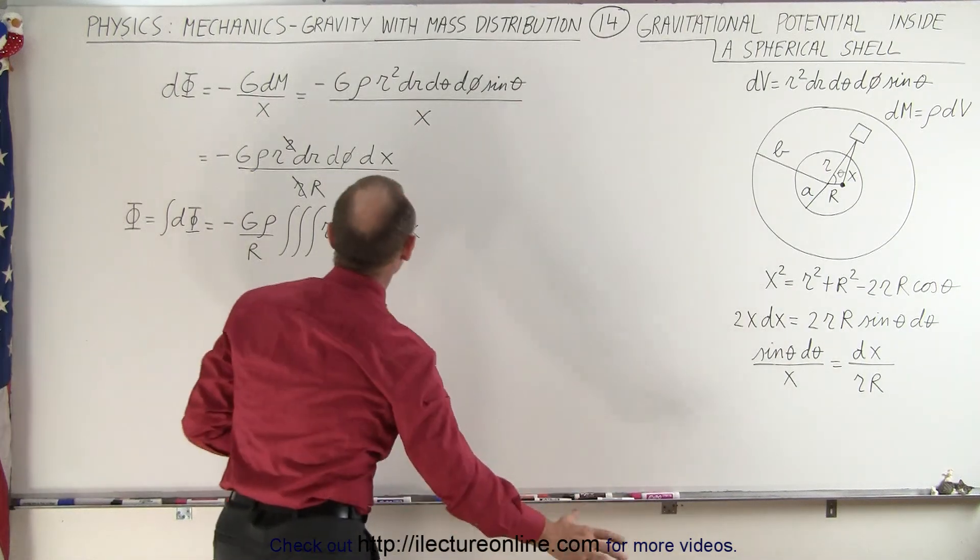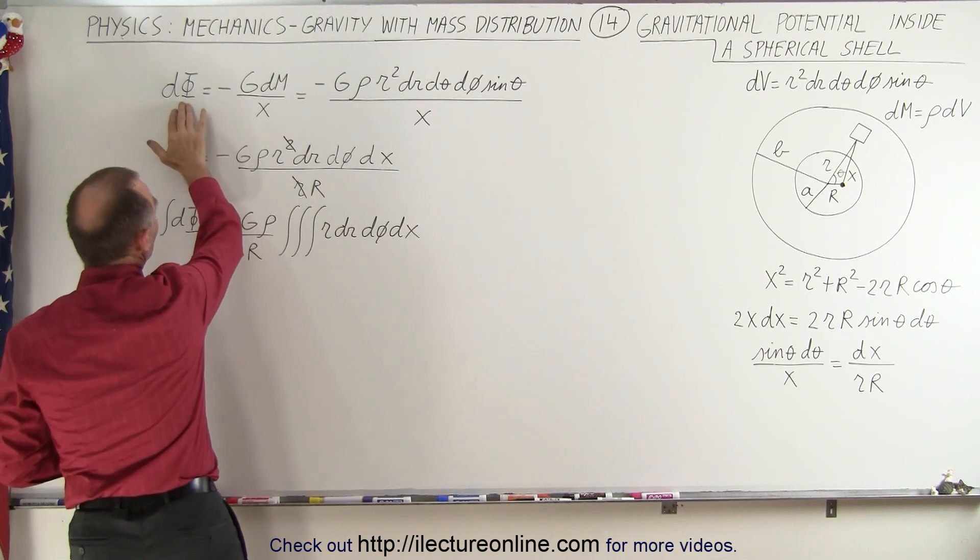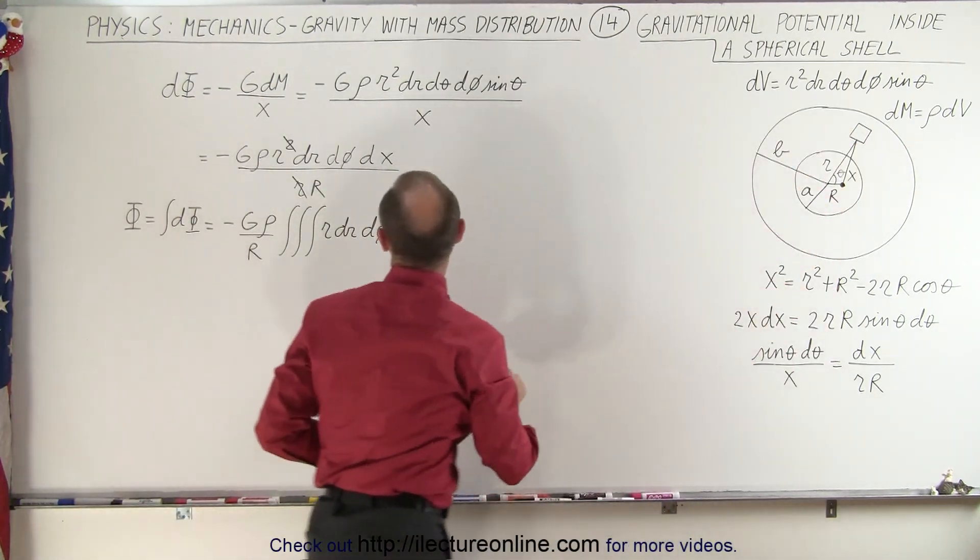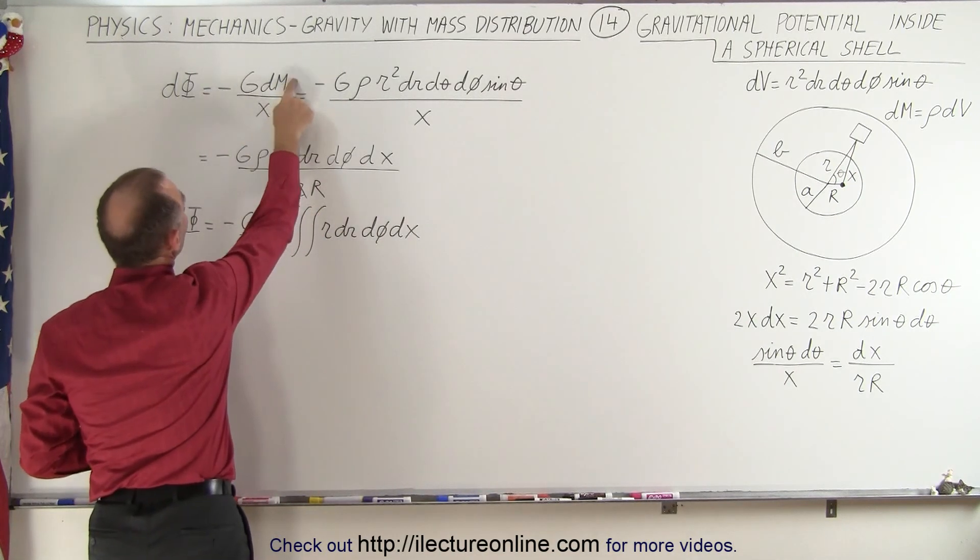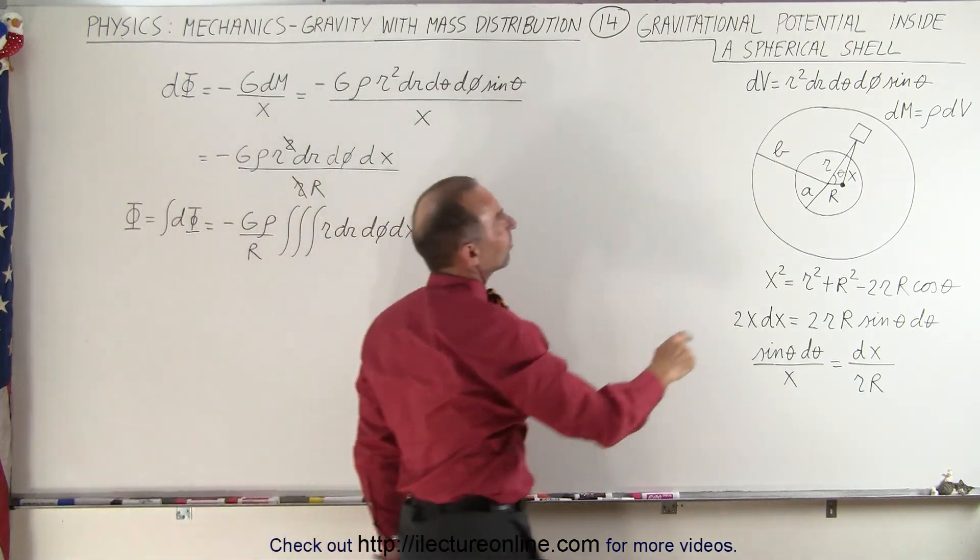The reason why we do that is when we define the small amount of gravitational potential caused by small little dm right here,